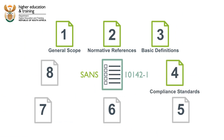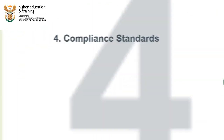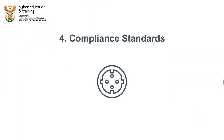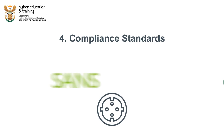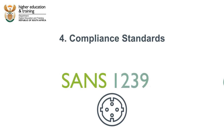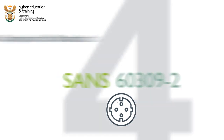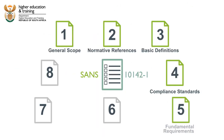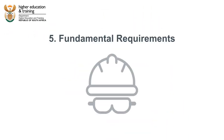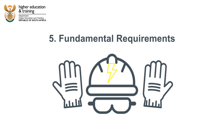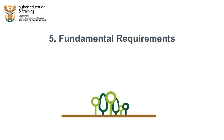Clause 4 lists all the applicable compliance standards for the electrical components used in installations. For example, it says that industrial socket outlets need to comply with SANS 1239, 60309-1 and 60309-2. Clause 5 sets out all the fundamental requirements for electrical installations, including those that relate to safety, voltage drops, the characteristics of the electrical equipment being used and the environmental conditions.